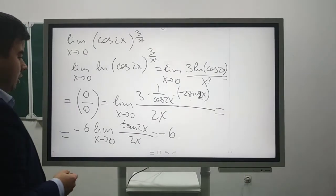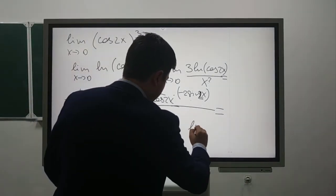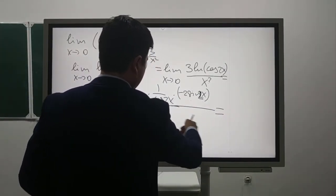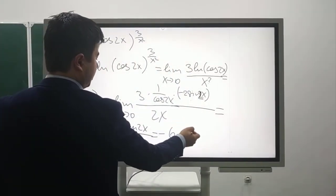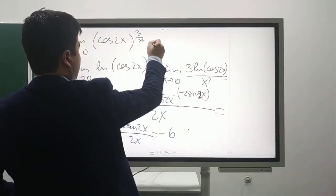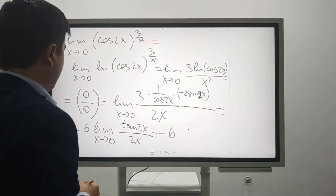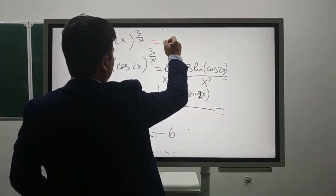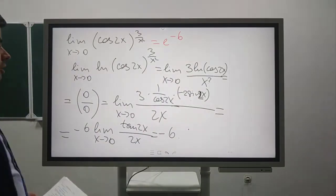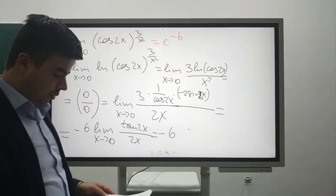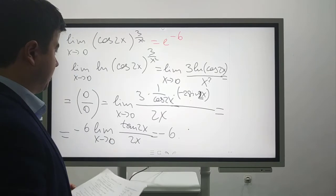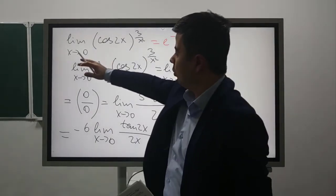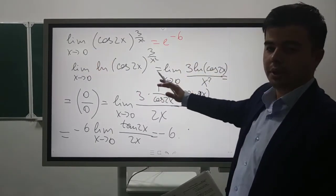But we found the logarithm of this limit, not the given expression itself. It means the limit of the given function is e^(-6), since the inverse operation gives e^(-6).